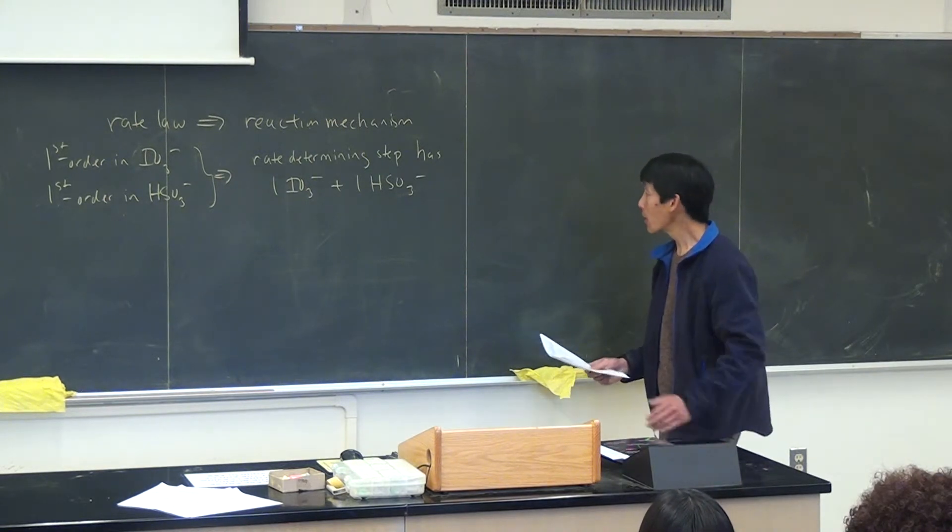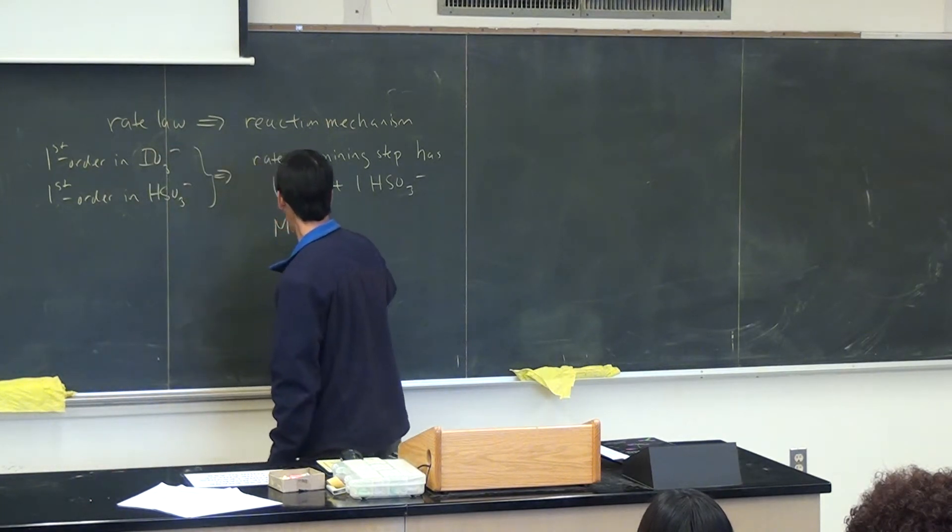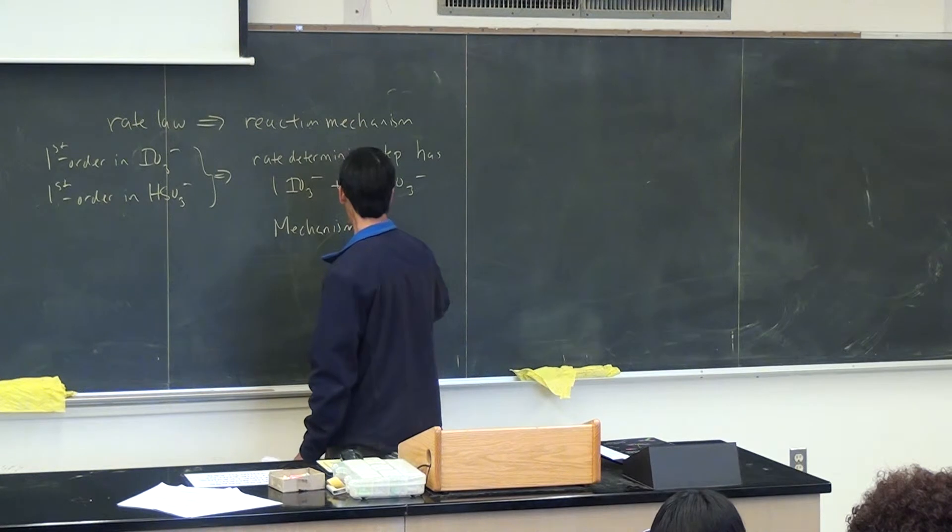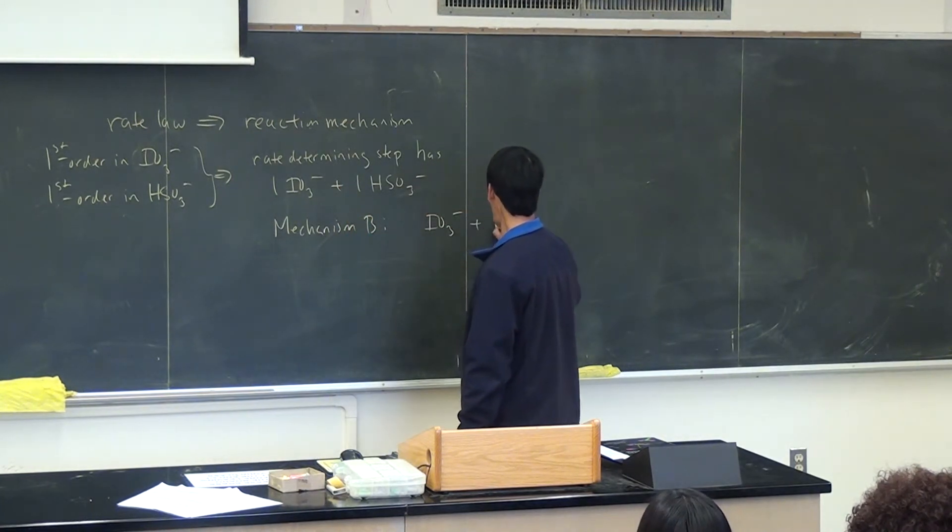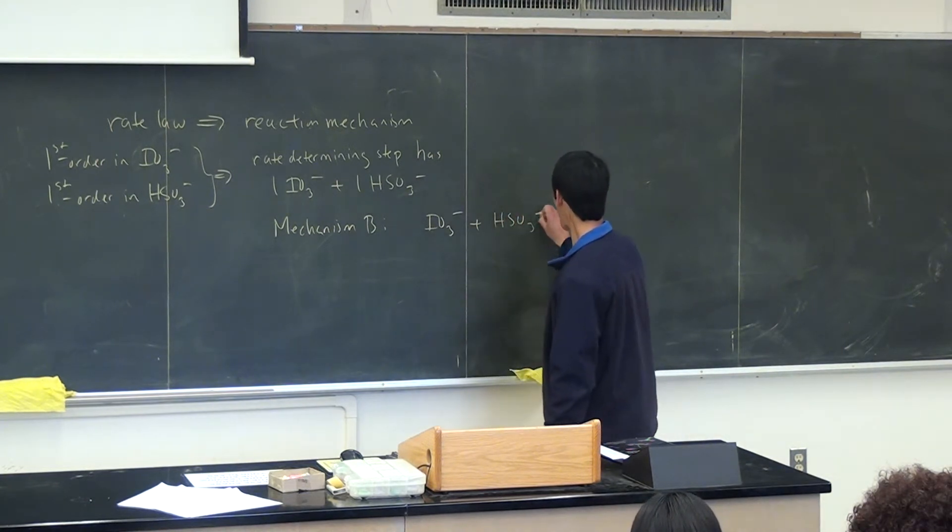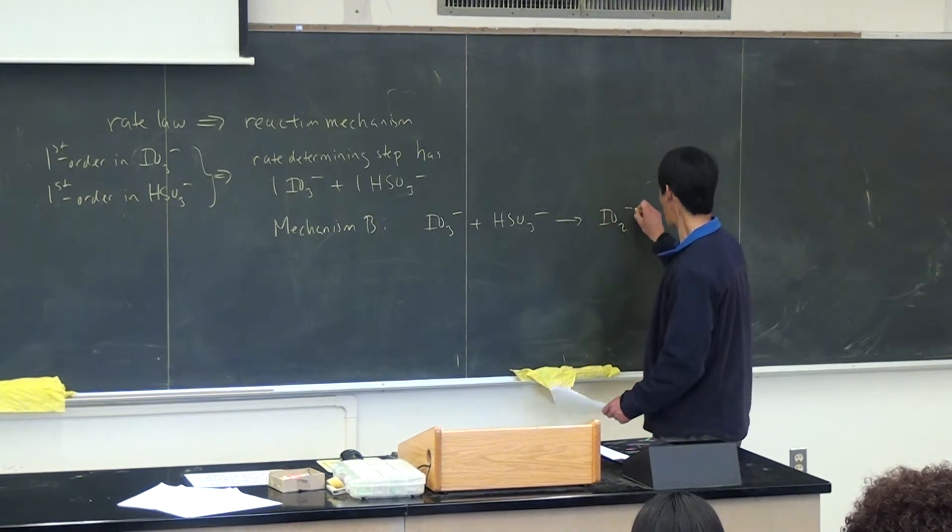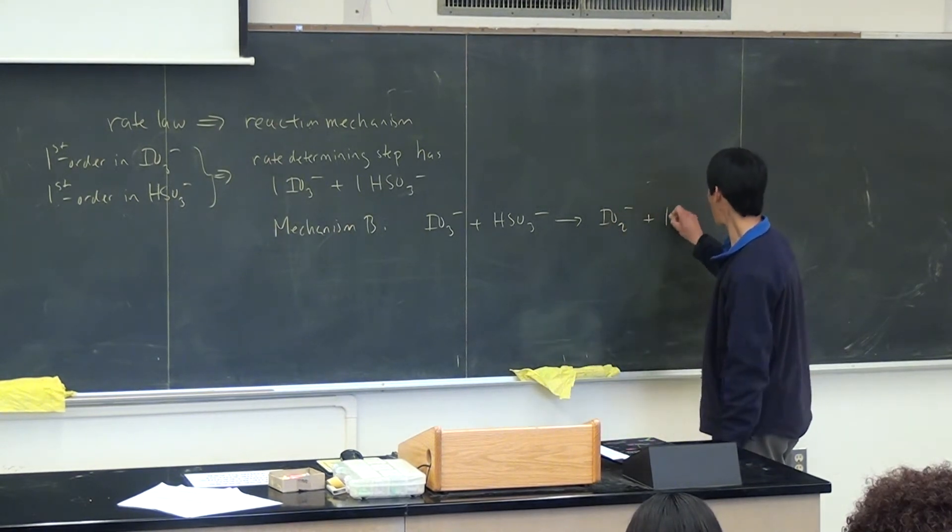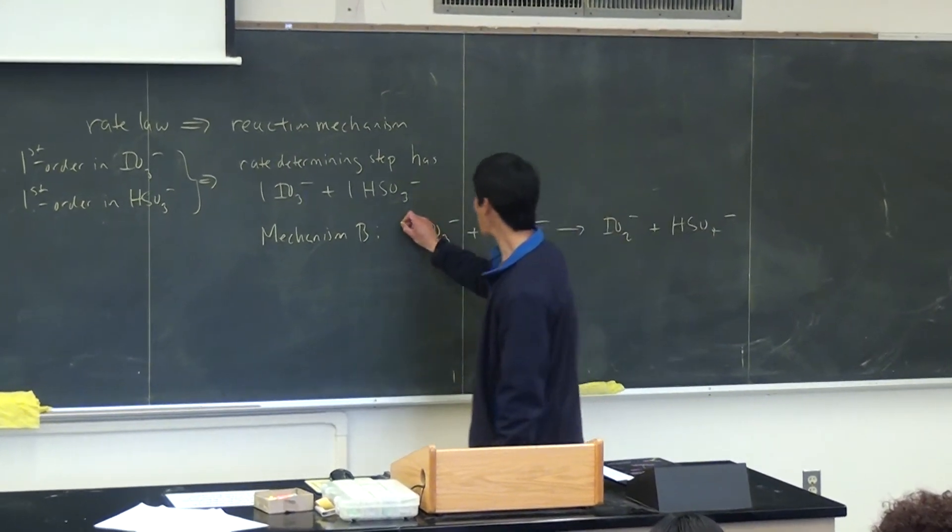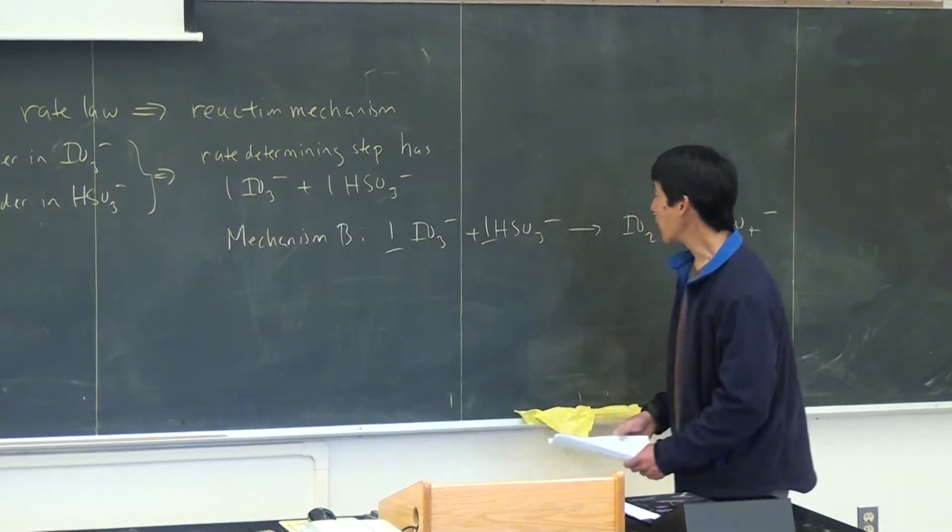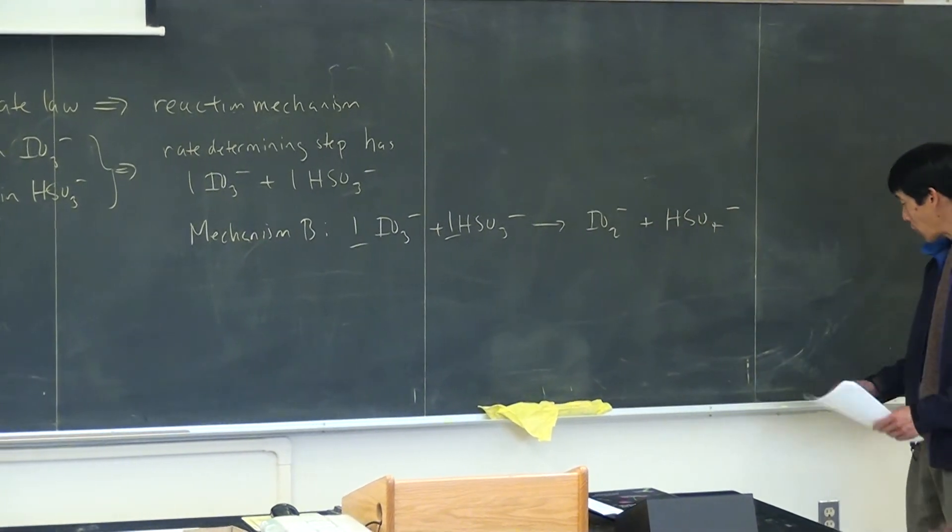So when you look at the three mechanisms, the only mechanism which has IO3 minus and HSO3 minus as reactants is mechanism B, and that would be the first step in that mechanism. So for mechanism B, the first step shows IO3 minus plus HSO3 minus, and that gives the products IO2 minus plus HSO4 minus. So note that this has one mole of each ion, therefore, that must be the mechanism. This is also the rate determining step.